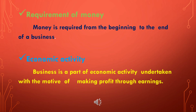The seventh characteristic is that business is an economic activity. Business is a part of economic activity undertaken with the motive of making profit through earning. It is undertaken with a purpose to earn financial returns, and in business such returns are in the form of profit — carried out for economic motivation to gain financial or monetary gain. The main characteristics of business are: objective of profit, exchange of goods and services, risk and uncertainty, creation of utility, continuous activity, requirement of money, and economic activity.